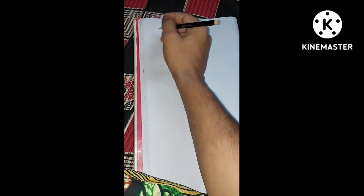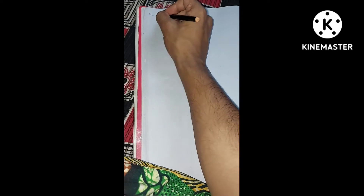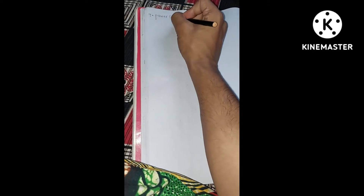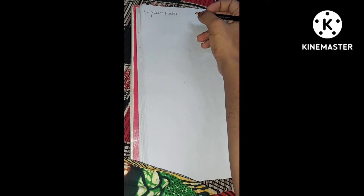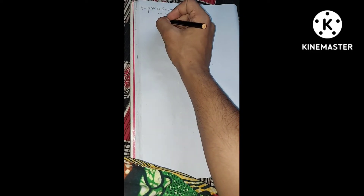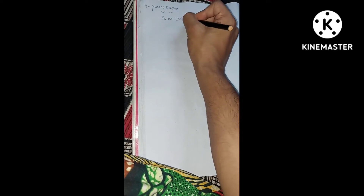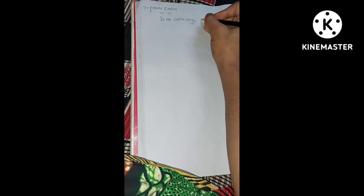Welcome everyone to this electrical engineering channel. The fourth question is about power factor — basically, what is power factor? Power factor is the cosine of the angle between voltage and current in an AC circuit.